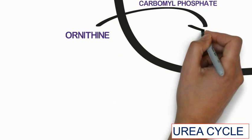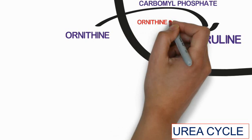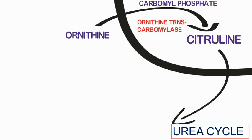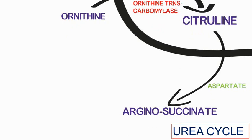Carbamyl phosphate combines with ornithine and produces the citrulline molecule via the enzyme ornithine transcarbamylase. Now citrulline is combined with the aspartate amino acid to produce arginosuccinate by the enzyme arginosuccinate synthase.